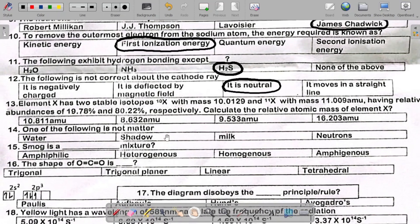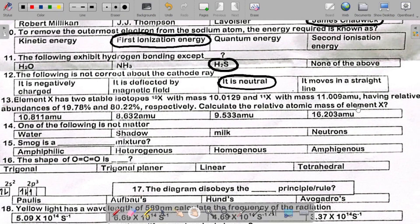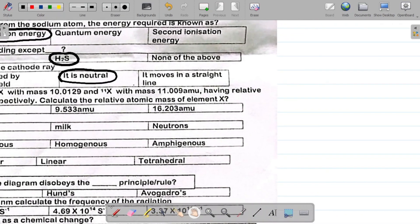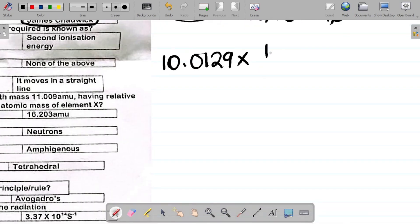Number 13 says element X has two stable isotopes. That's X10 with mass 10.0129 and X11 with mass 11.009 AMU, atomic mass units, having relative abundances of 19.78% and 80.22% respectively. Calculate the relative atomic mass of element X. I'll just take the first atomic mass, 10.0129 multiplied by the relative abundance, which in this case is 19.78%. So multiplied by 19.78 all over 100.